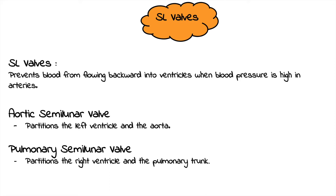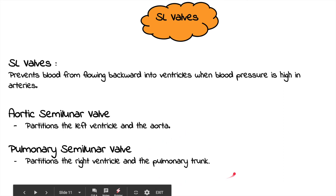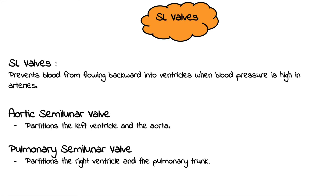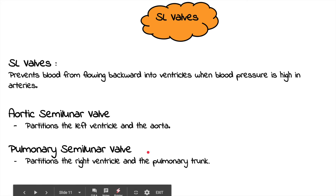The aorta is taking blood away from the heart to the rest of the body. The pulmonary trunk is taking blood away from the heart to the lungs to get oxygenated. The aorta is part of our systemic circulation, and the pulmonary trunk is part of our pulmonary circulation.